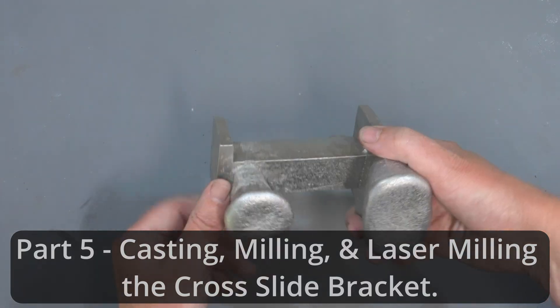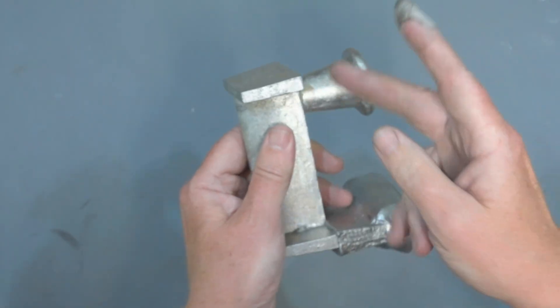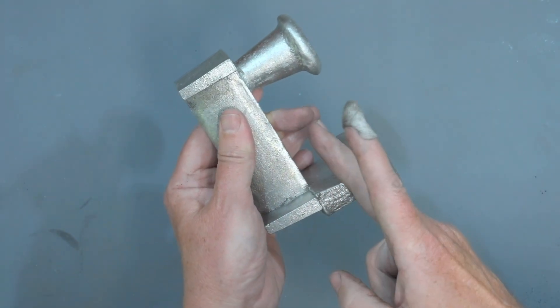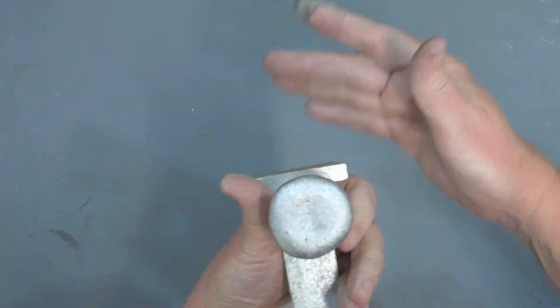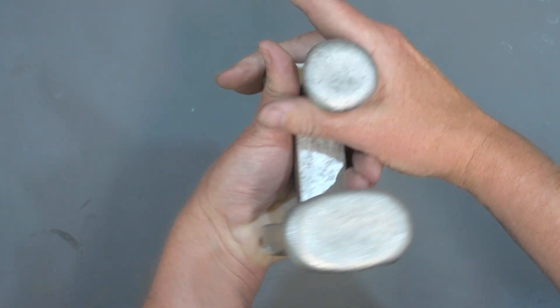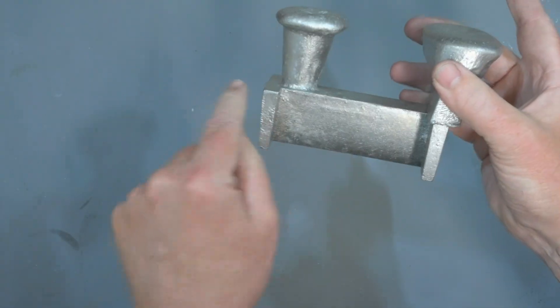Well here's the casting, just washed the Petrobond off it and it's ready for machining. Cut that off there, this is going to get cut off a bit higher. This is the bit that then bolts to the lathe and then this is the bit that the stepper motor will bolt to with the shaft running through it.